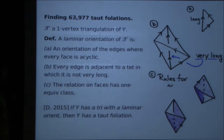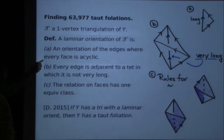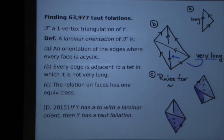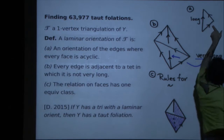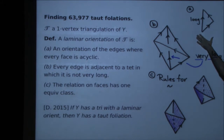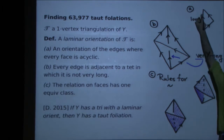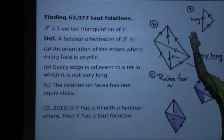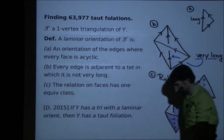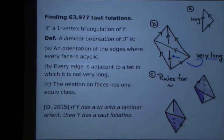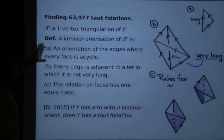A laminar orientation is first of all just an orientation of the edges of the triangulation, and I want it to be acyclic: for every face, every triangle, you're not allowed to have the three edges oriented in a consistent cyclic manner. That means, up to isomorphism, every face is going to look exactly like this picture. The edge going from the source to the sink I'll call the long edge of the triangle. If you read Hatcher's algebraic topology carefully, you'll realize this condition is exactly the same as saying this is a delta complex.